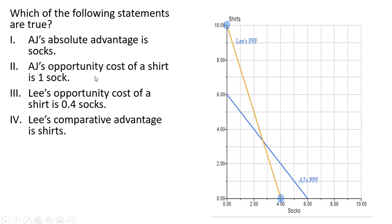Statement 2: AJ's opportunity cost of a shirt is 1 sock. We're calculating the opportunity cost of producing 1 shirt for AJ — we take the horizontal intercept and divide it by the vertical intercept: 6 divided by 6 is 1. So every time AJ produces a shirt, he gives up 1 sock. Statement 3: Lee's opportunity cost of a shirt is 0.4 socks. For Lee, 4 divided by 10 is 0.4, so every time Lee produces a shirt, he gives up a little less than half a sock. Both statements are true.